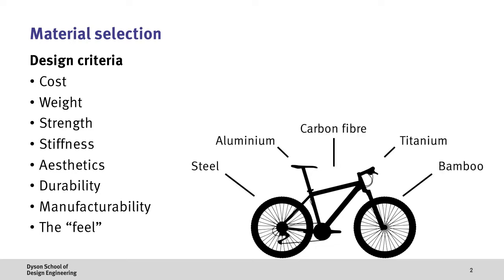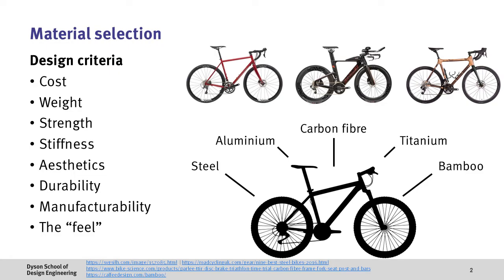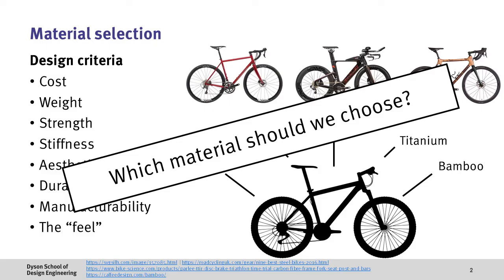Then if we think about what materials are available to us there's an even greater list of possibilities ranging from metals such as steel to composites such as carbon fiber reinforced polymers and even natural materials such as bamboo. Therefore the question is which material should we use and are there any design tools which help us to make these decisions?